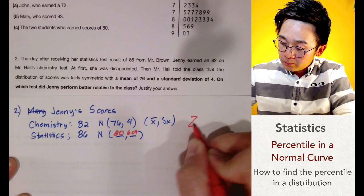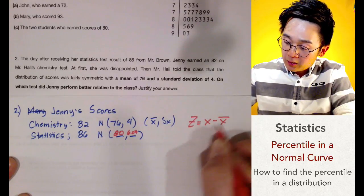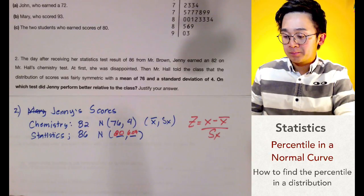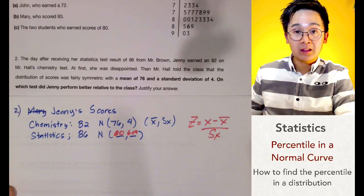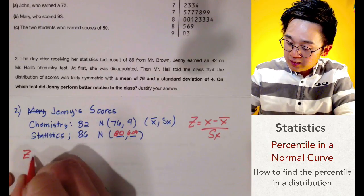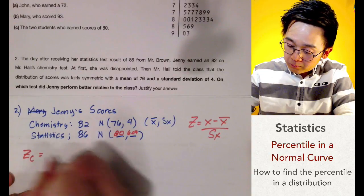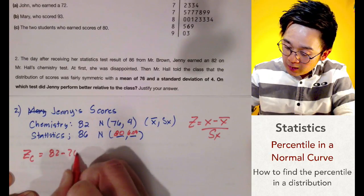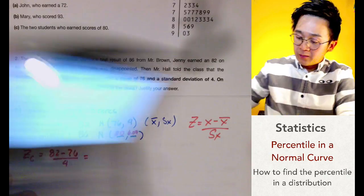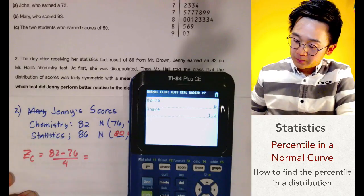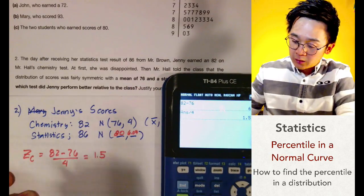The z-score formula is x minus mean, all over the standard deviation. The z-score tells us the percentile position within a distribution defined by the mean and standard deviation. For Jenny's chemistry z-score: (82 − 76) / 4 = 1.5. So her z-score for chemistry is 1.5.